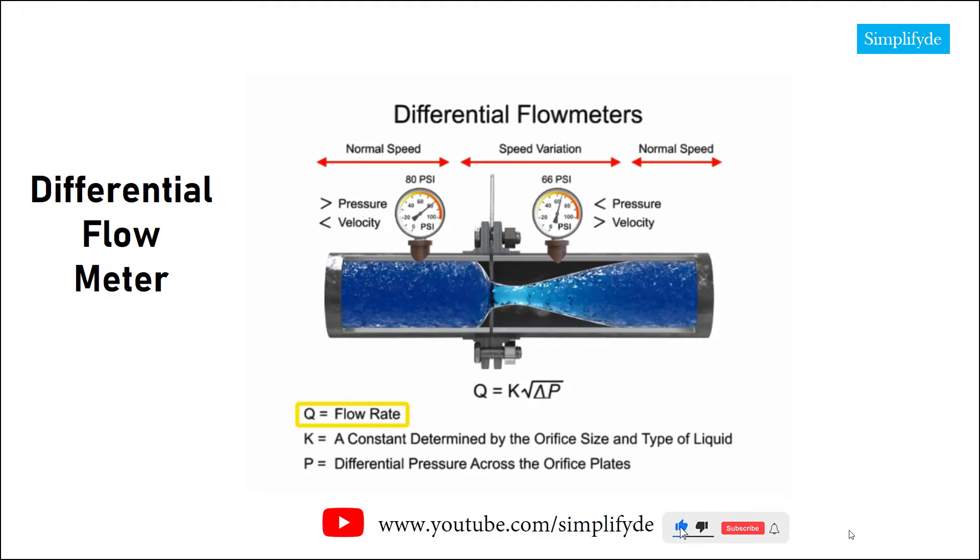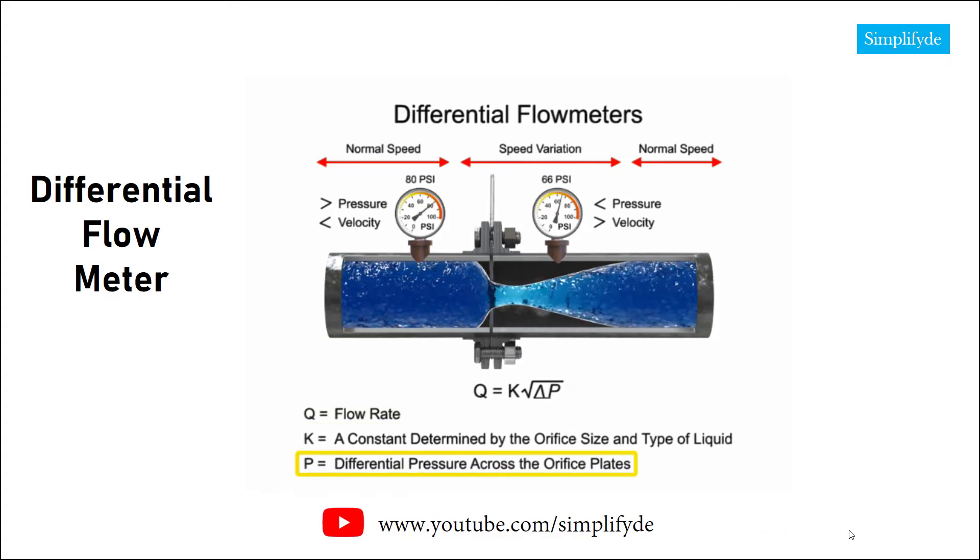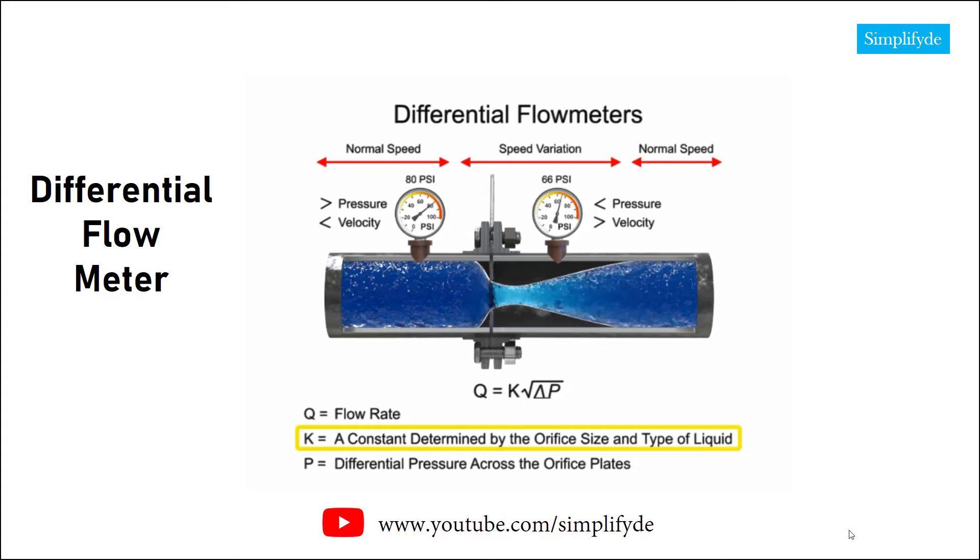The flow rate, Q, of a fluid through an orifice plate increases in proportion to the square root of the pressure difference on each side multiplied by the k-factor.